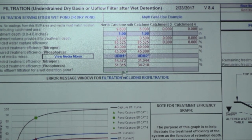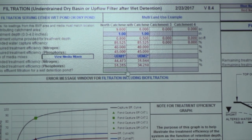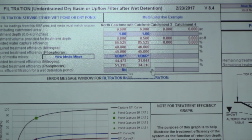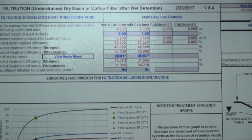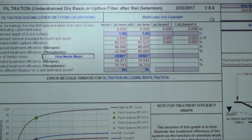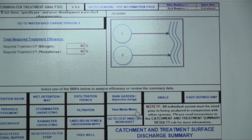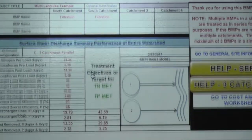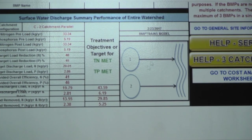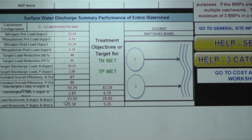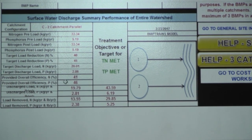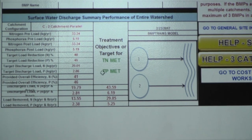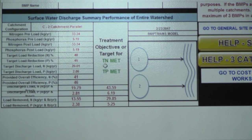Finally, for the question of whether this is effluent filtration for a wet pond — select no from the drop-down menu. We're now done entering information for the modular wetlands. Go to stormwater treatment analysis, then to the catchment and treatment surface discharge summary to view results. We can see filtration in both the north and south catchments, two catchments in parallel shown in the diagram, and a summary of pre- and post-loading and provided removals. The results show that we met our objectives for both total nitrogen and total phosphorus.